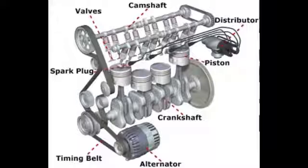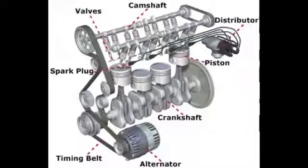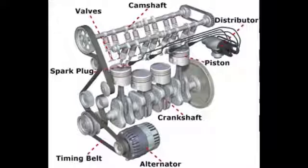All in all, the motion of the entire system comes from the pistons moving up and down from the explosions inside. The pistons turn the crankshaft, and from there, using a belt and pulley system, the crank turns the alternator to charge the battery, and then the camshaft which opens and closes the valves to let more gas in and exhaust out.